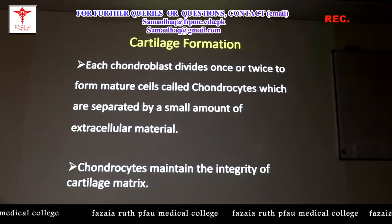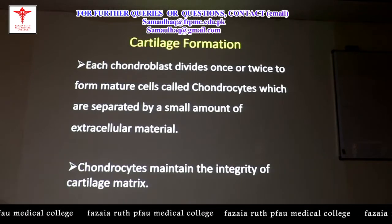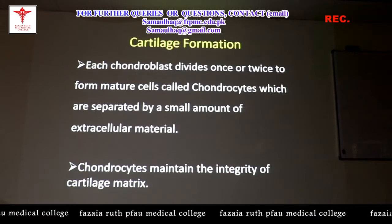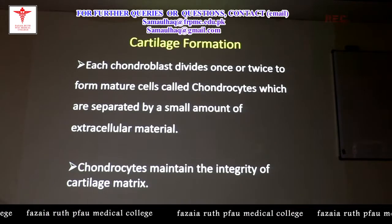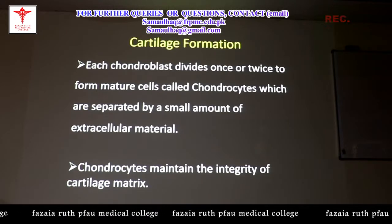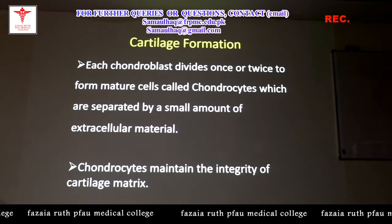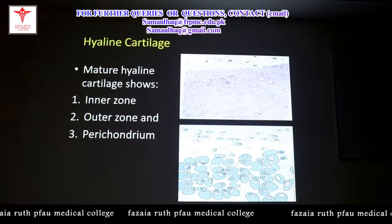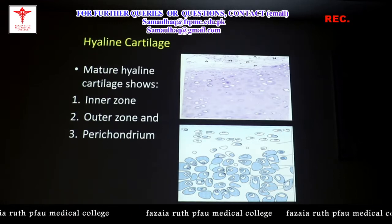Each chondroblast divides once or twice to form mature cells known as chondrocytes, which are separated by a small amount of extracellular material. The baby cells are chondroblasts and the mature cells are chondrocytes. These chondrocytes maintain the integrity of the cartilage matrix.